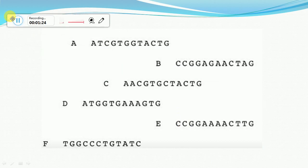For UPGMA, we first need some sequences for which we calculate or generate the phylogenetic tree. In this example I've taken six sequences: A, B, C, D, E, and F. With the help of these sequences I'll be generating a phylogenetic tree to show how they are related to each other.